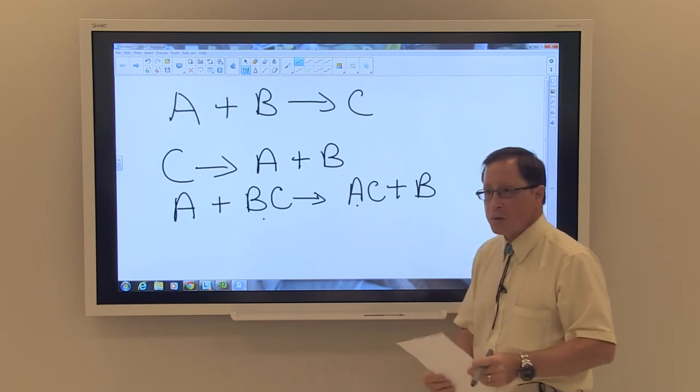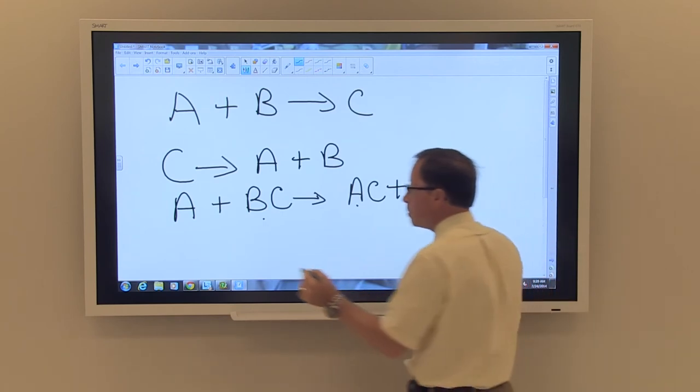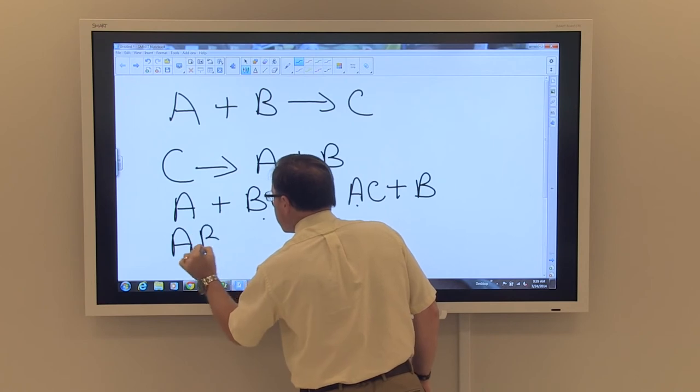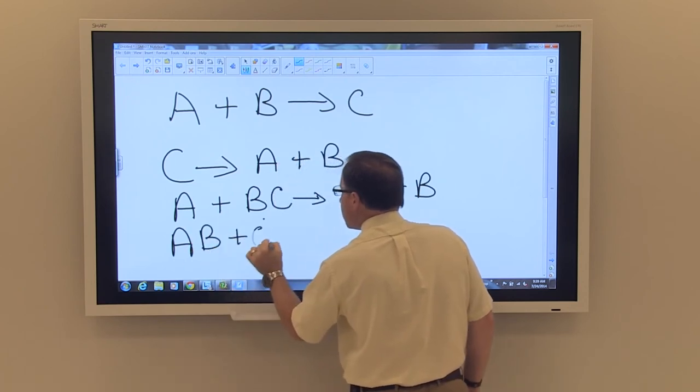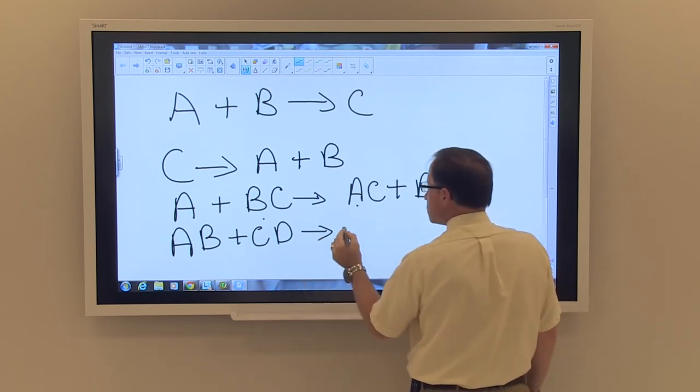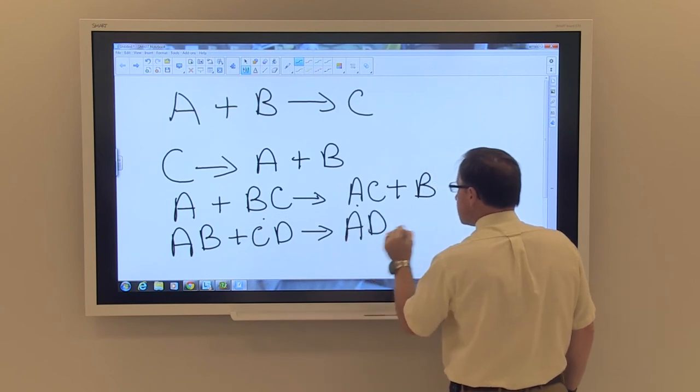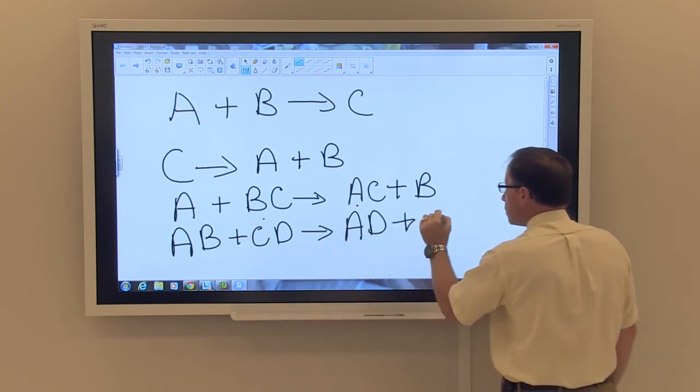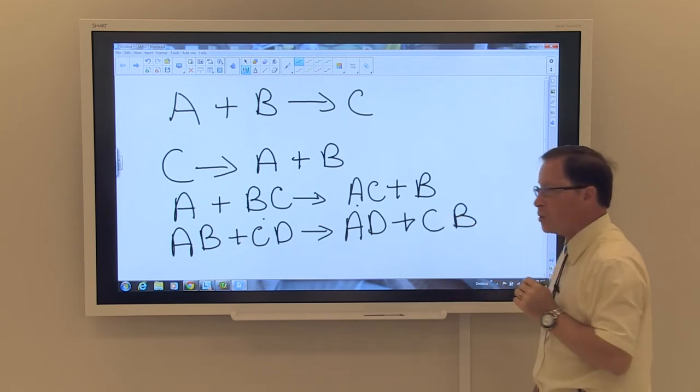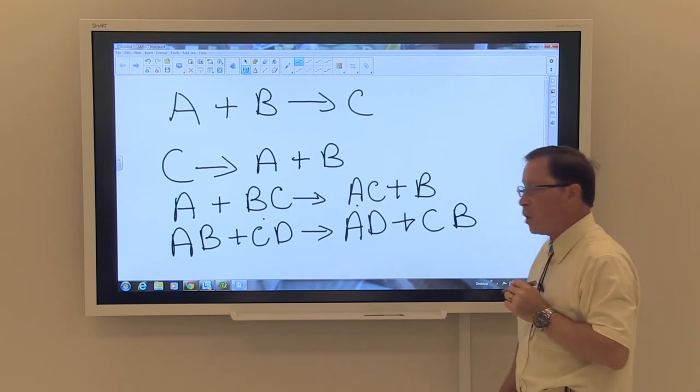The last chemical reaction that we typically talk about is called a double replacement reaction. In this reaction, what you see is that the cations exchange places in this reaction.